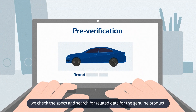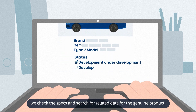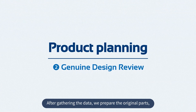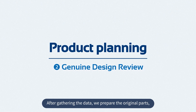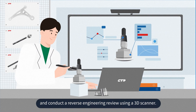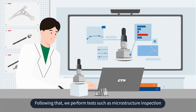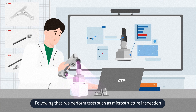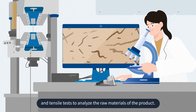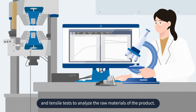After gathering the data, we prepare the original parts and conduct a reverse engineering review using a 3D scanner. Following that, we perform tests such as microstructure inspection and tensile tests to analyze the raw materials of the product.